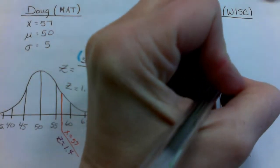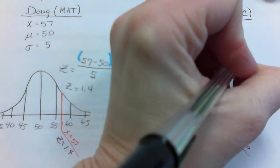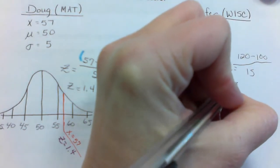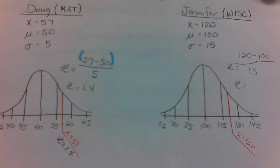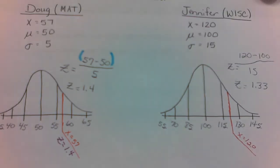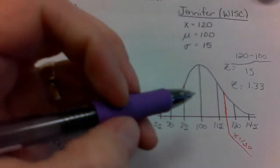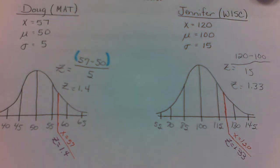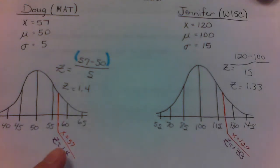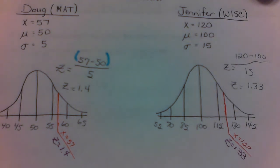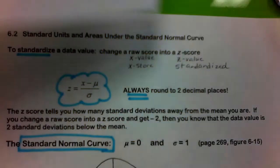Now for Jennifer: X = 120, μ = 100, σ = 15. Z = (120 − 100) ÷ 15 = 1.33. Jennifer's raw score is 120 and her standardized score is 1.33, meaning she is one full standard deviation and 0.33 of the next. That tells us Doug did slightly better than Jennifer, because the further you move to the right, the better your score.